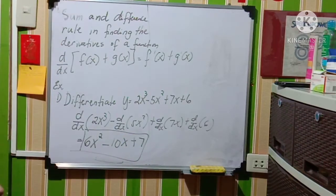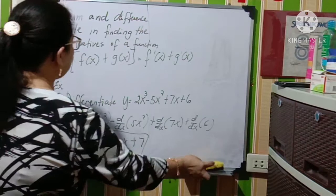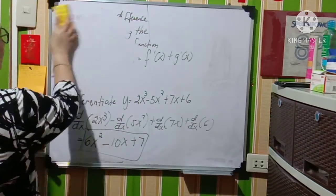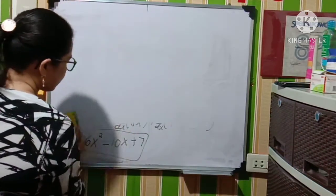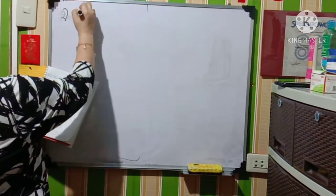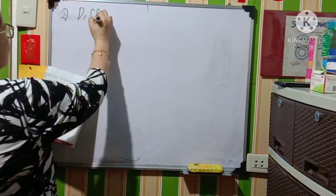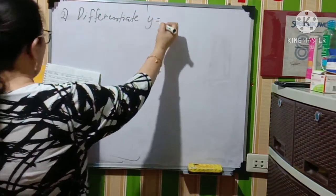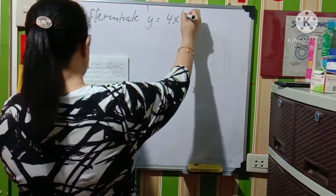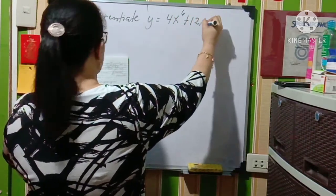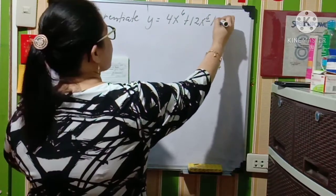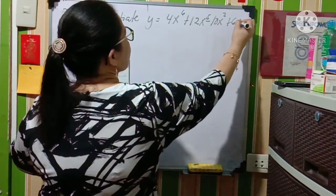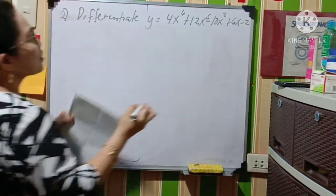Okay, another one. I will be giving you another example. So for example number two, differentiate y is equal to 4x raised to the sixth power plus 12x to the fifth power minus 10x squared plus 6x minus 2. How many terms are there?